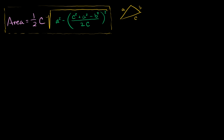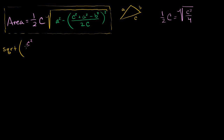The first thing we want to do is bring this 1/2 c under the radical sign. So 1/2 c is the same thing as the square root of c squared over 4. You take the square root of that, you get 1/2 c. So this whole expression is equal to the square root of c squared over 4 times all of this.